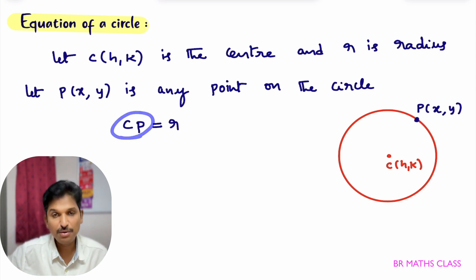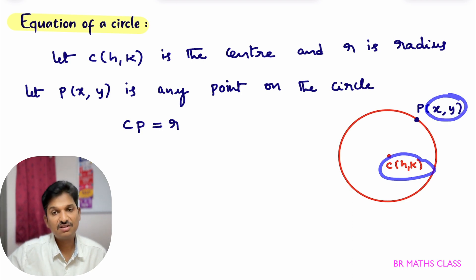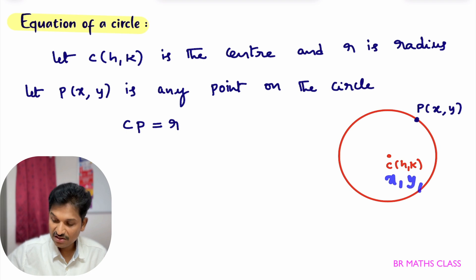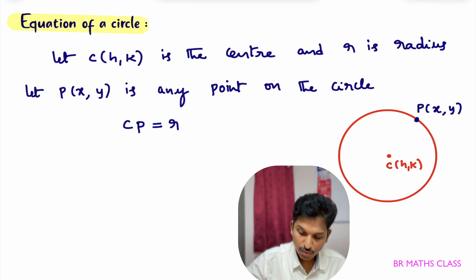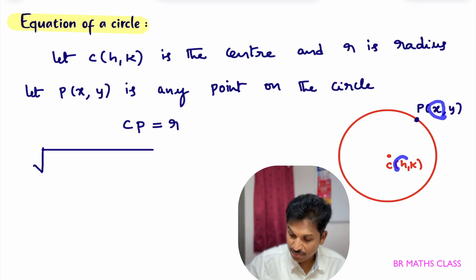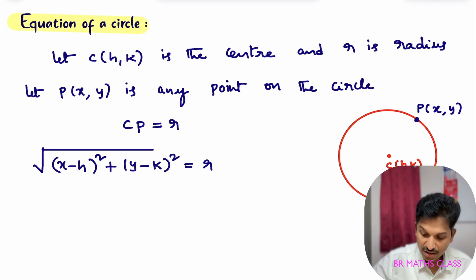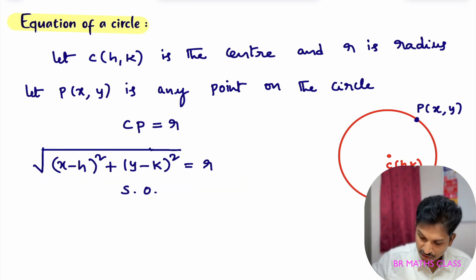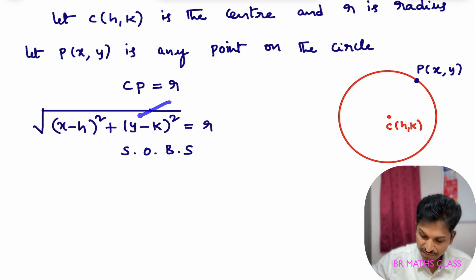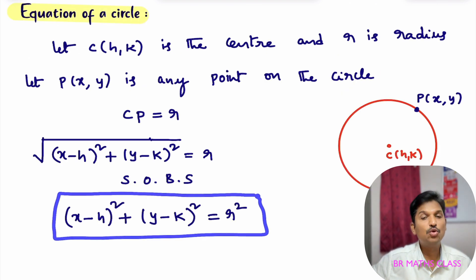We know C is (h, k) and P is (x, y). Taking C as (x₁, y₁) and P as (x₂, y₂), the distance formula gives CP = √[(x₂ - x₁)² + (y₂ - y₁)²]. Applying the formula: √[(x - h)² + (y - k)²] = r. To remove the square root, I square both sides: (x - h)² + (y - k)² = r².